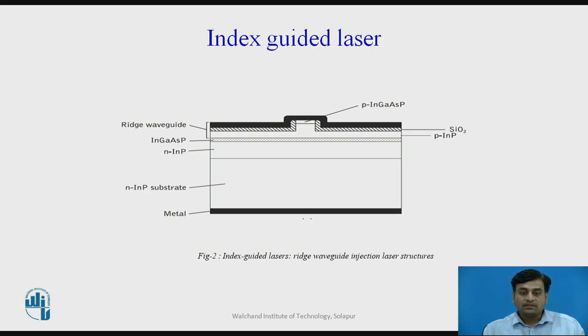The ridge not only provides the location for weak index guiding but also acts as a narrow current confining strip. These devices have been fabricated to operate at various wavelengths with a single lateral mode. And room temperature threshold current as low as 18 mA with output power of 25 mW.